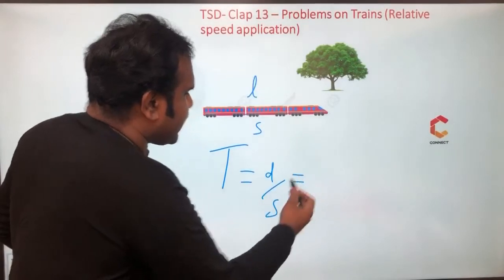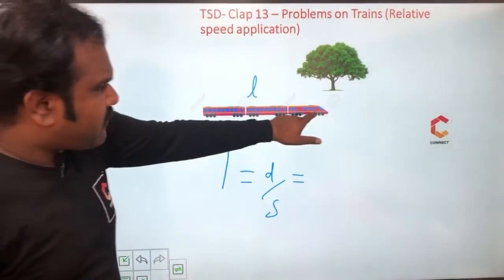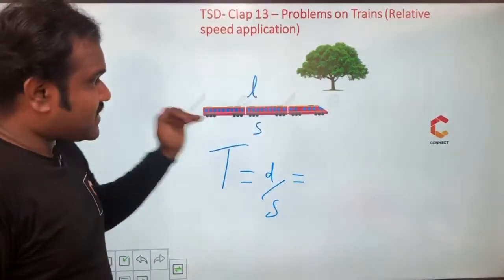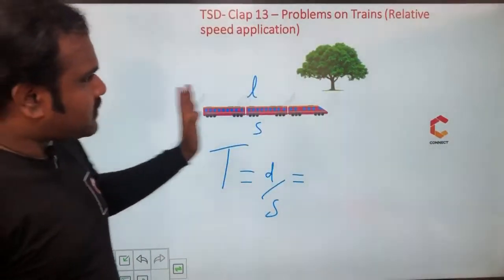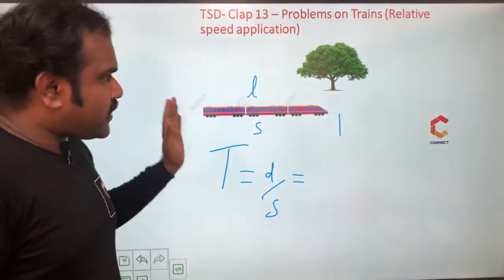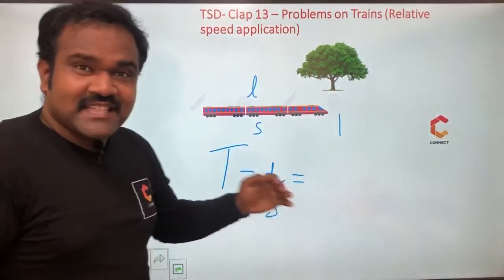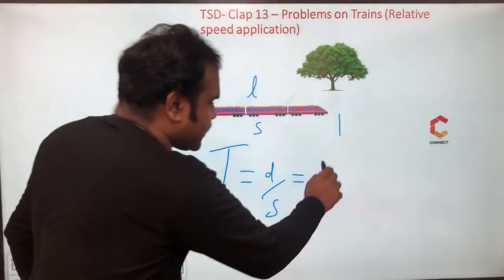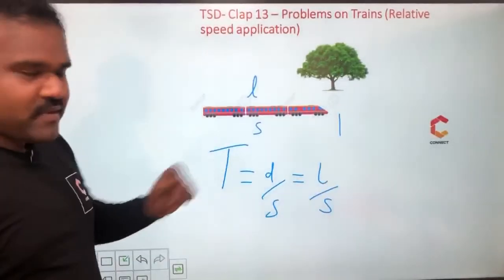What is the distance covered here? See when the front end of the train touches this tree, we can say it has started crossing. When the back end comes here, we can say it has finished crossing. So in this transaction, the distance covered is the train's own length. So distance covered is equal to L by S. This is case number 1.